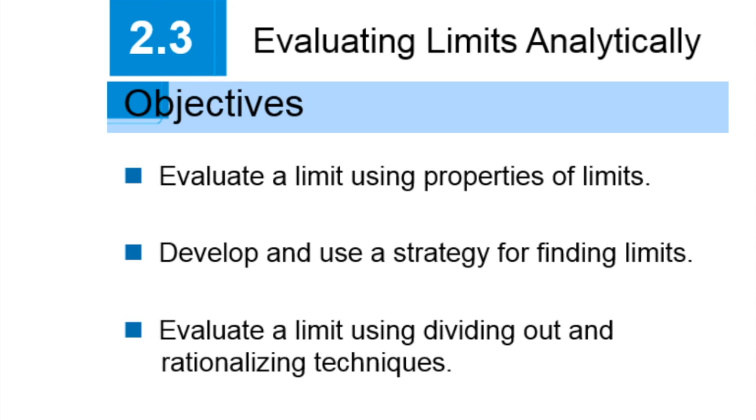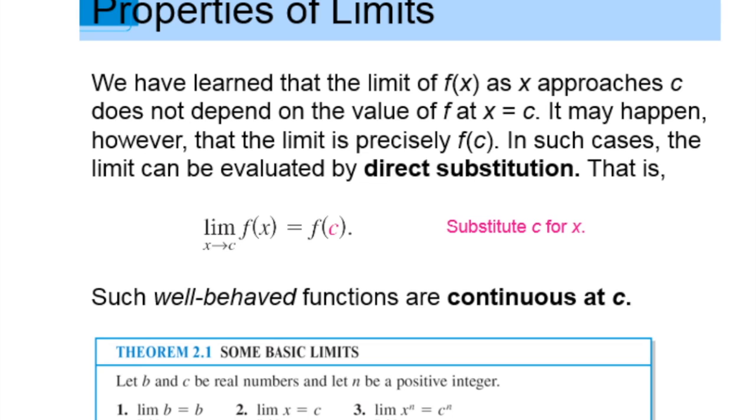So the first thing we're going to talk about is some limits that are nice and easy for us. We have learned that the limit of f of x as x approaches c does not depend on the value of f at x equal to c. It may happen, however, that the limit is precisely f of c. In such cases the limit can be evaluated by direct substitution.